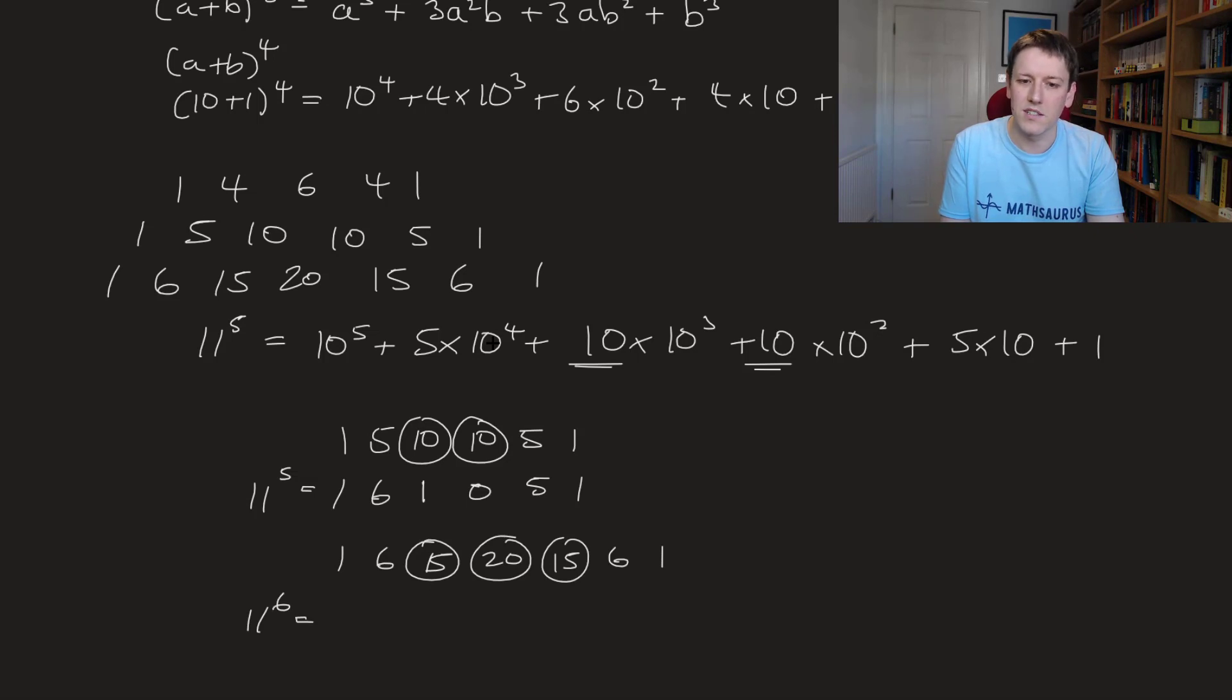So we'll get 11 to the power of 6 is 1, the 15, I carry a 1 here, and I'm left with a 5, but I carry a 2 from the 20 to make 7. I've got a 0, but I carry a 1 from the 15 to get 1, and then I get 5, 6, 1, and that's 11 to the power of 6.